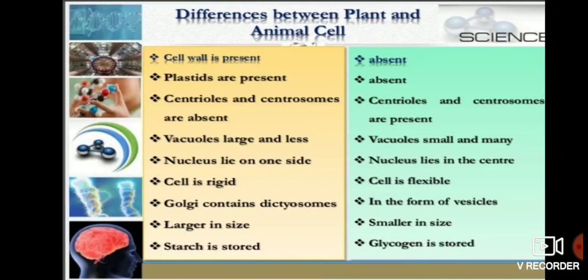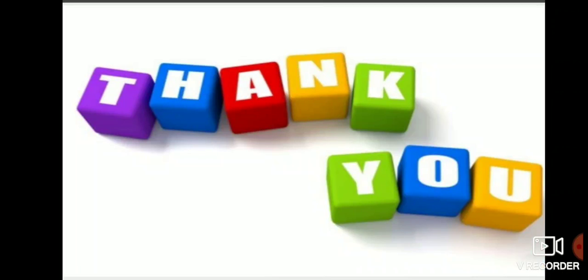In plant cells, cell division — specifically the process of cytokinesis — occurs through cell plate formation. In animal cells, cytokinesis occurs through cell furrow formation. That is the overall description of the differences between plant cell and animal cell. Thank you.